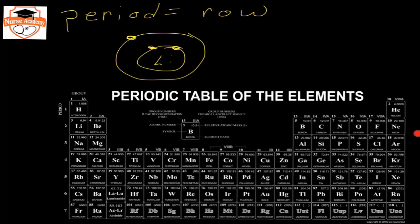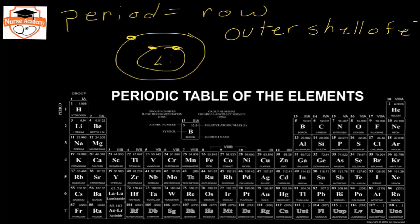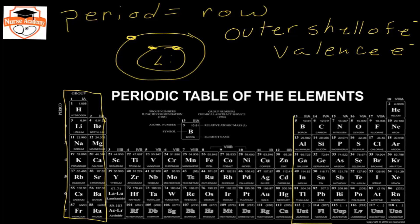The lower the period is on the periodic table, the more outer that shell of electrons is. The outer shell of electrons is the only part of the atom that can interact with neighboring atoms, which is why we use this to explain reactivity. These outer shell electrons have a special name: valence electrons. The valence electrons are specifically the S electrons and the P electrons on the periodic table.